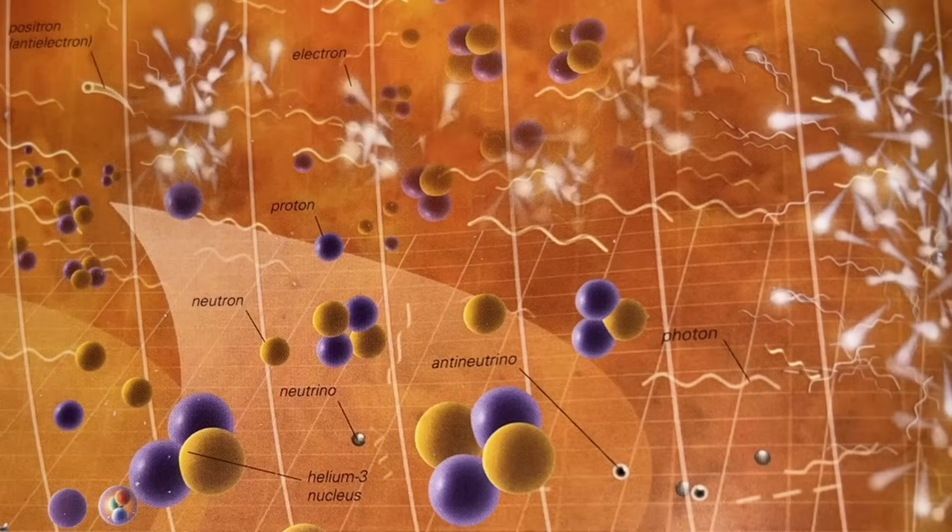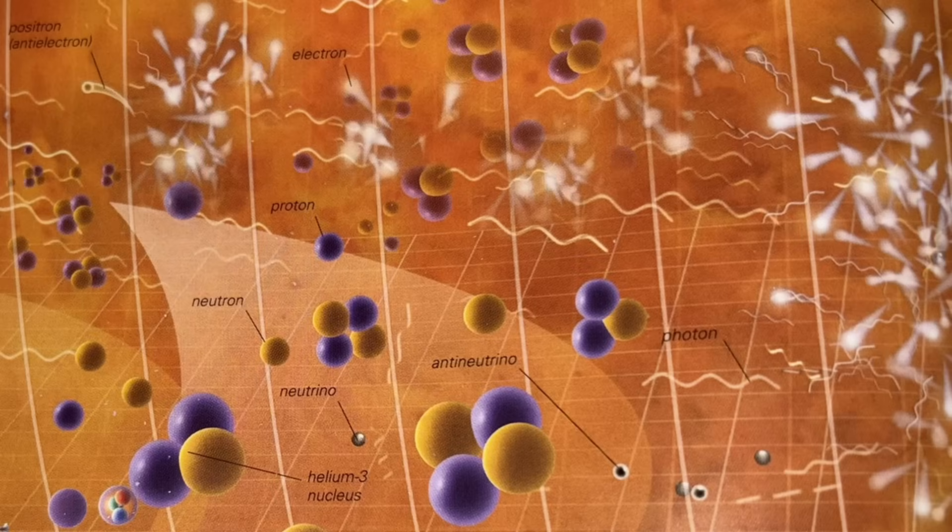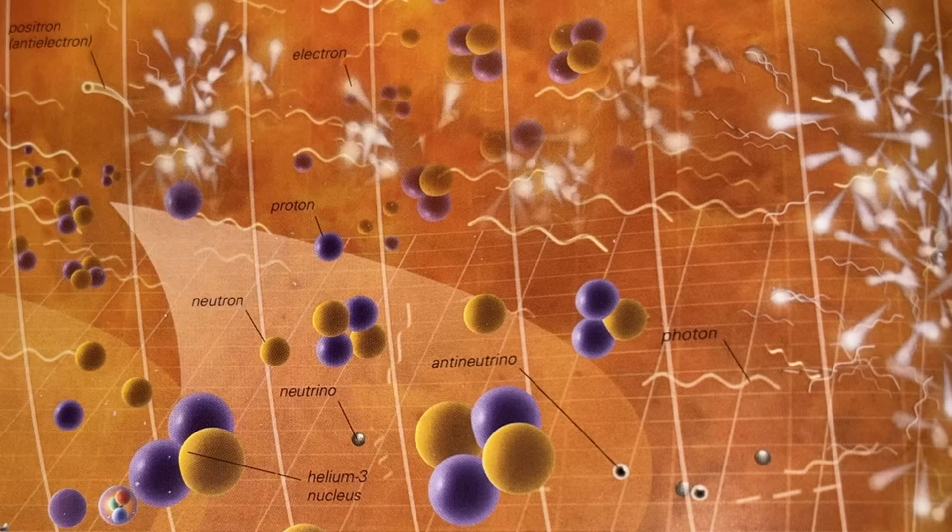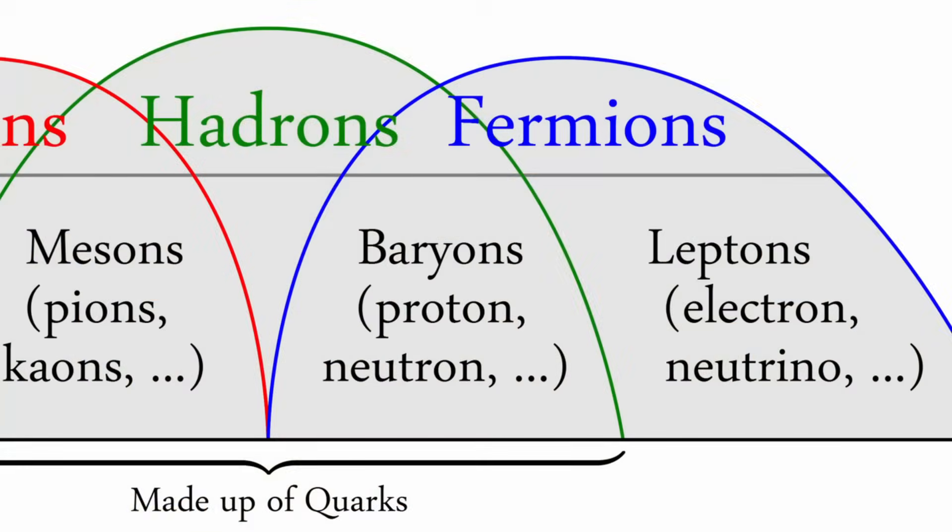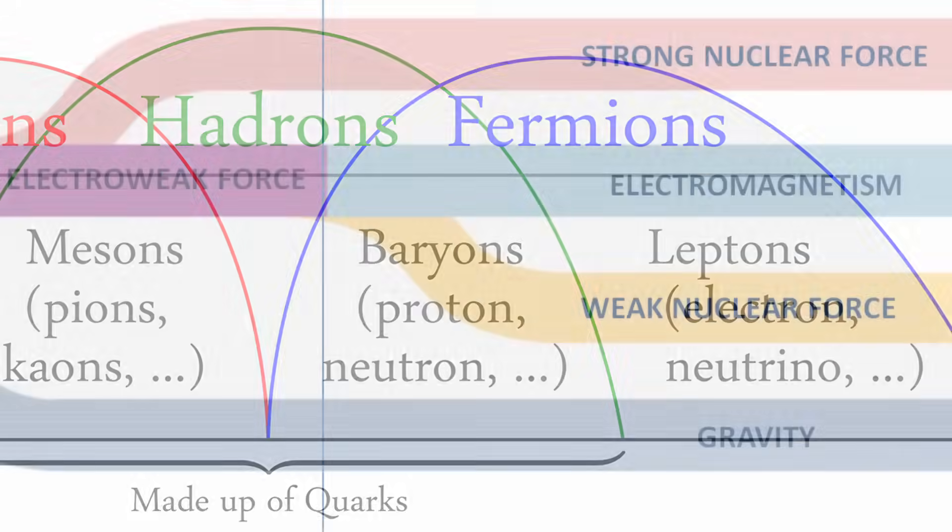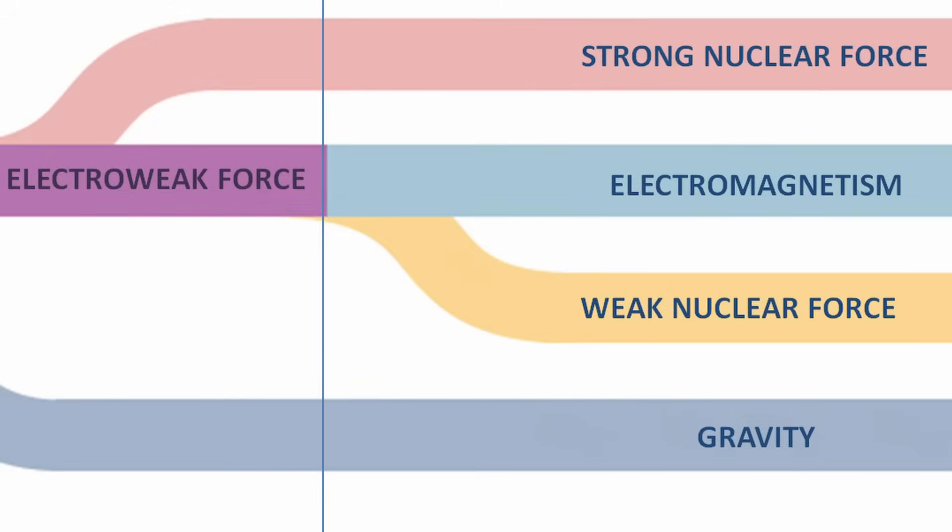One millisecond after the Big Bang, the lepton era occurred. The observable universe had grown to around 600 billion miles in diameter and was about 1,800 billion degrees Fahrenheit. During this era, leptons were very numerous. A lepton is a general name for electrons, neutrinos, and their antiparticles. Leptons do not take part in the strong force that binds quarks together. Instead, they interact via the weak force, gravity, and electromagnetism.